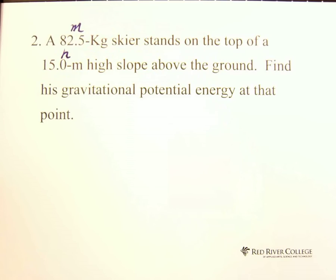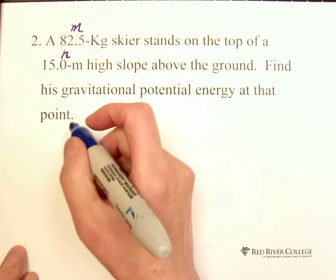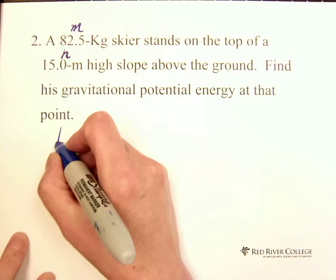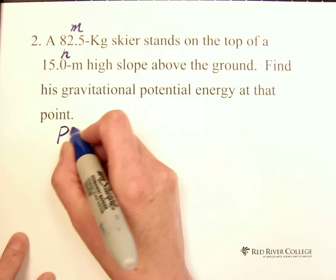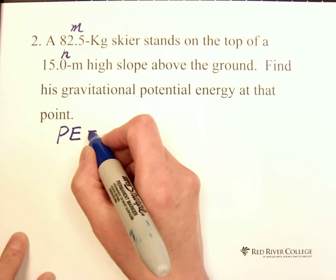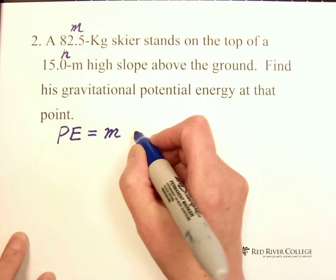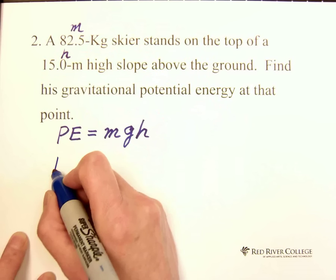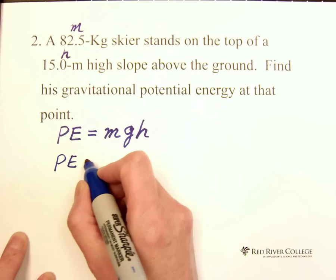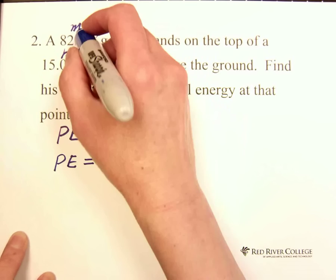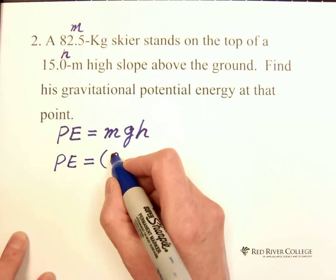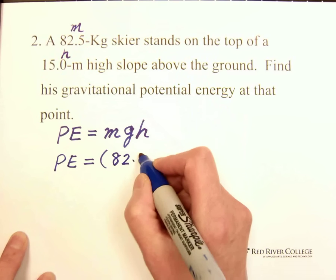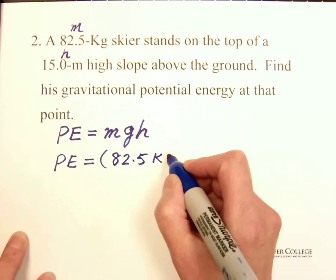The ground is the reference surface above the ground with 15 m high slope, H equals 15 m. Find his gravitational potential energy at that point. Follow the formula. We have PE equals mgh equals M equals 82.5 kg, already kg.